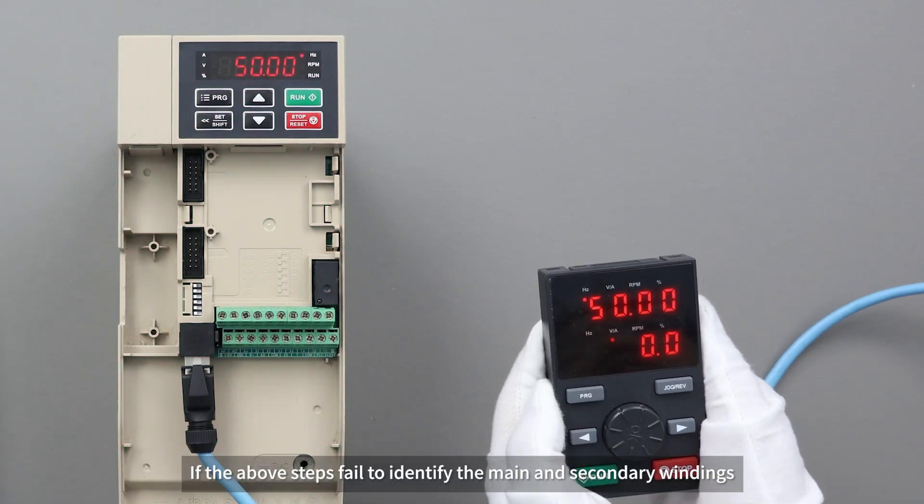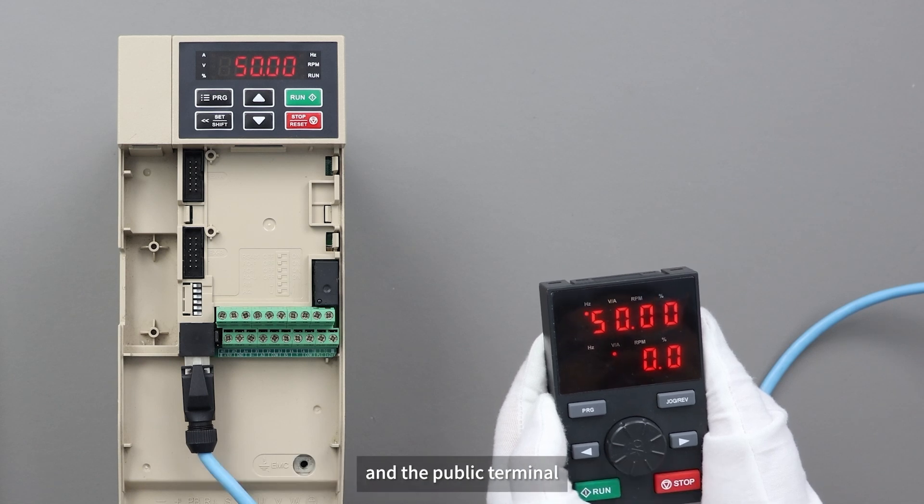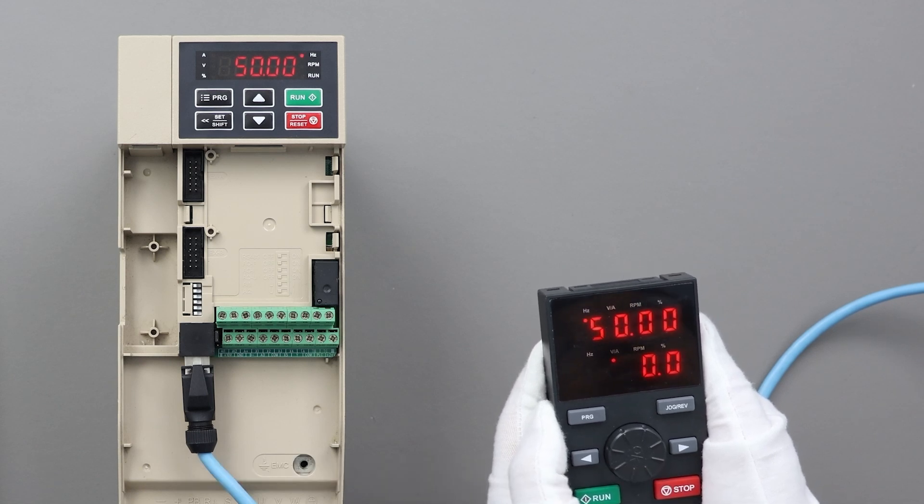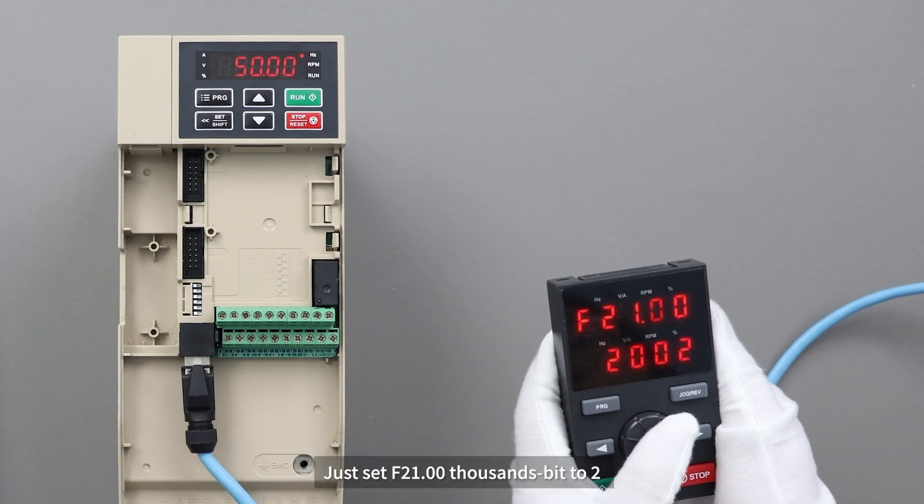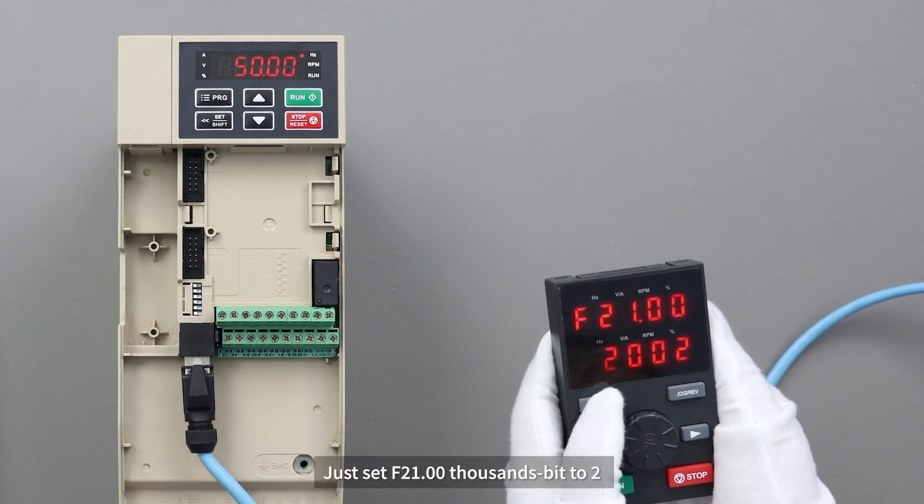If the above steps fail to identify the main and secondary windings and the public terminal, don't worry, we've got the phase sequence tuning function. Just set F21.00 thousands bit to 2.